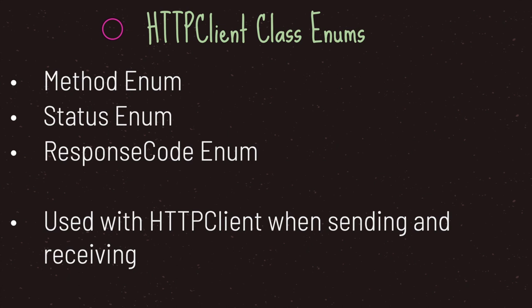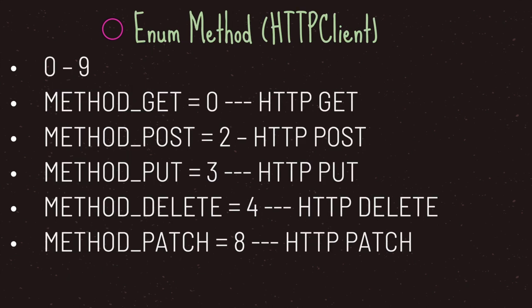The first enumeration type is method. The second is status. And the third is response code. We're going to need to understand these enumeration types from HTTP client in order to properly use the HTTP request node. The method enumeration from HTTP client gives you ten choices. The enumeration values are integers zero through nine, and each one stands for a different type of request method. Method GET is the value of zero.